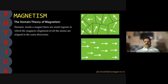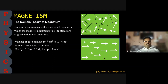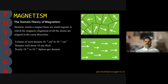The value of each domain is around 10⁻⁴ cm² to 10⁻² cm². These are regions in which the magnets align in the same direction after coupling. The domain wall is about 10 nanometers thick. In one domain, nearly 10¹⁷ to 10²¹ dipoles are present in a single domain, meaning that many atomic magnets are aligned in the same direction.